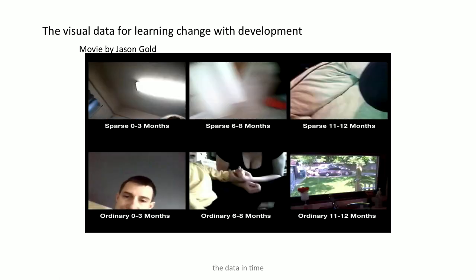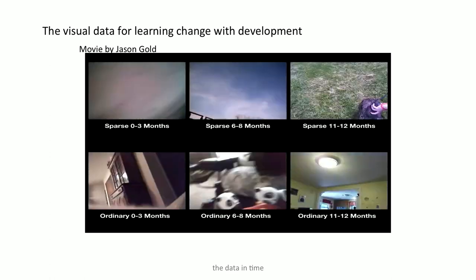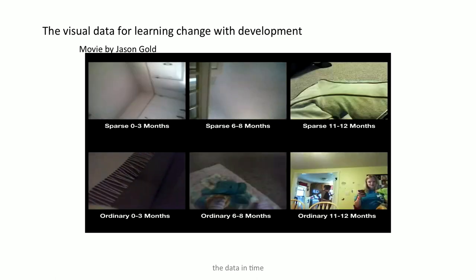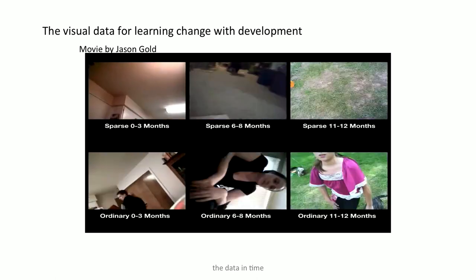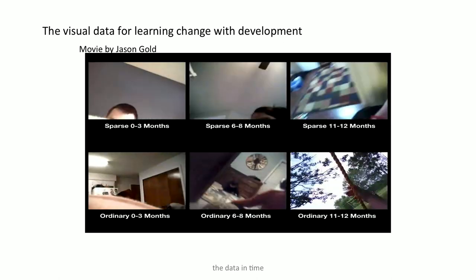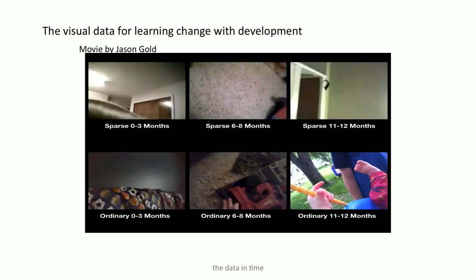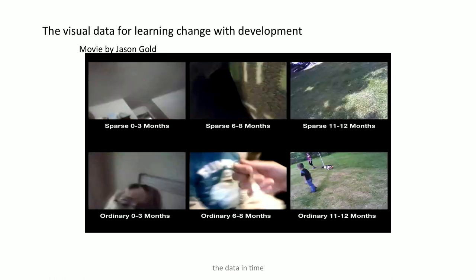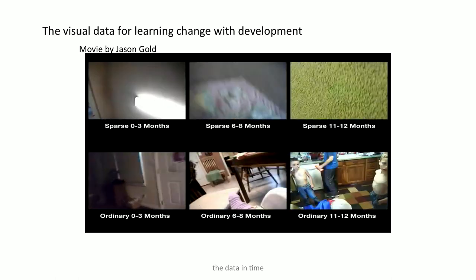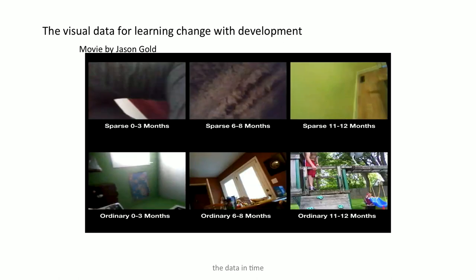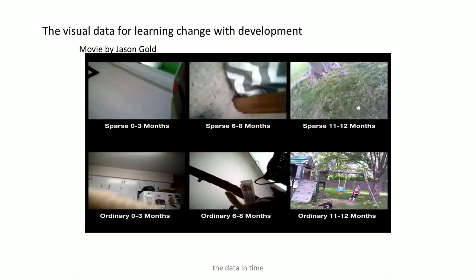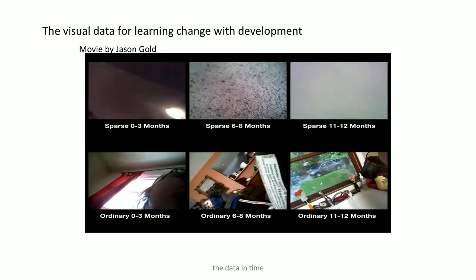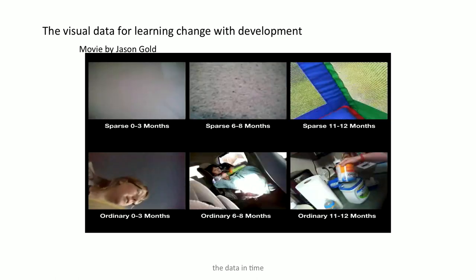The first thing you need to know is that the baby's view is not our view. Looking at images across ages: babies under three months show a lot of lights and ceilings, and people's faces show up a lot. Babies six to eight months show the floor — they are crawling or falling on it. For the 11 to 12 month old, these start looking more like what you would see if you were taking pictures yourself. The visual data for learning is changing dramatically with development.